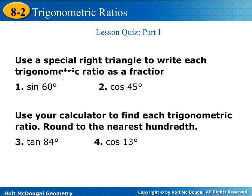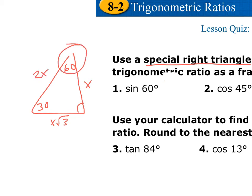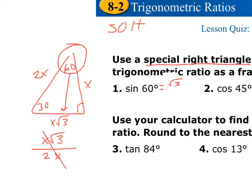The next couple of examples are a little tricky because we're using special right triangles. Remember our 30-60-90 triangle? We have 30, 60, and 90. The opposite of the 30 is X, opposite of the 60 is X√3, and the hypotenuse is 2X. Now we're trying to find the sine of 60. Sine is opposite over hypotenuse, so we do X√3 over 2X. The X's cancel out, so the sine of 60 is √3 over 2.